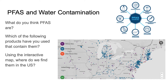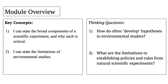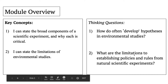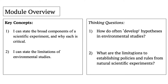Today we're going to be thinking about the scientific method and PFAs and a story of Vermont and water quality. Here's our modular overview. We need to be able to know what the broad components of a scientific method are and what the limitations of environmental studies are. Here are some different thinking questions as we go through this module.